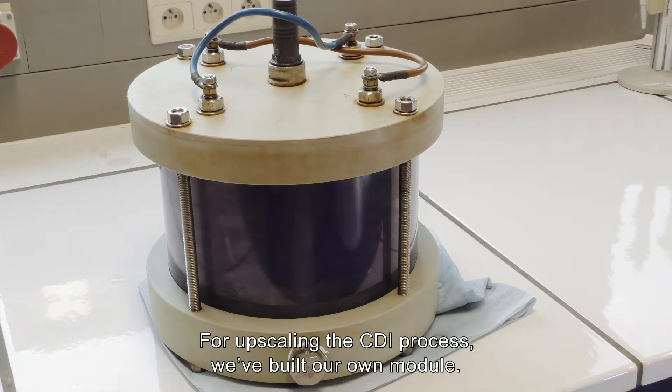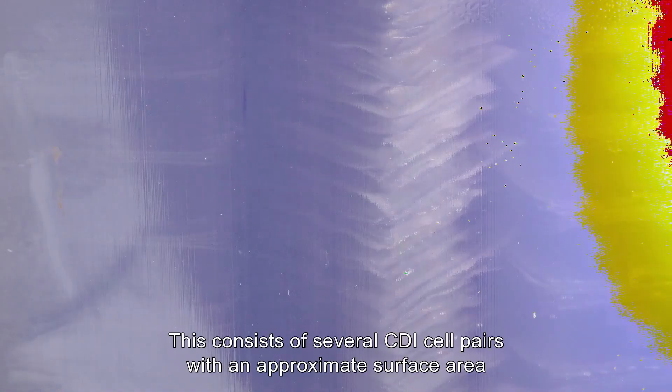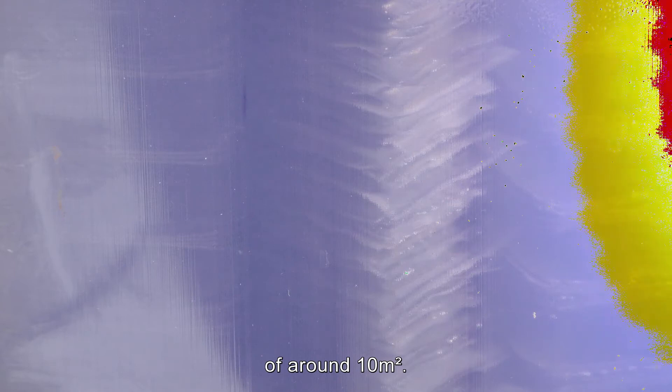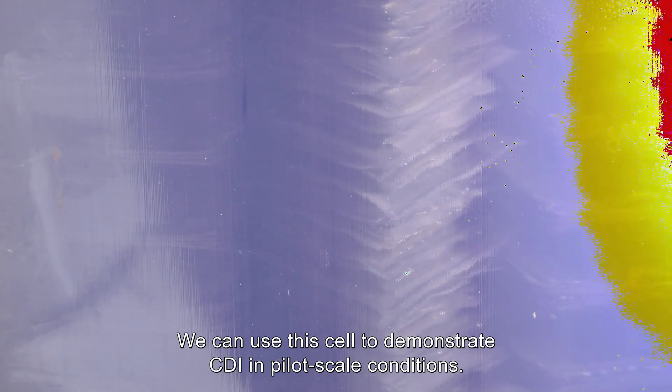For upscaling the CDI process, we build our own module. This consists of several CDI cell pairs with an approximate surface area of around 10 square meters. This cell we can use to demonstrate CDI in pilot scale conditions.